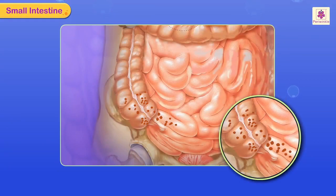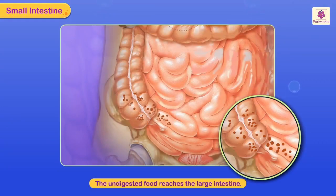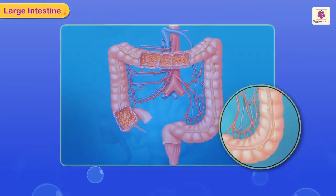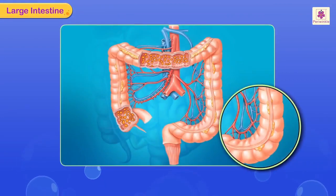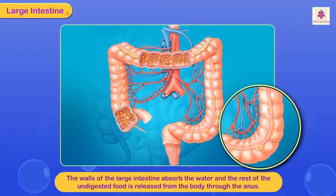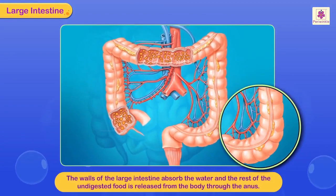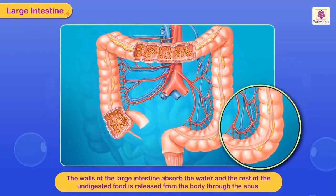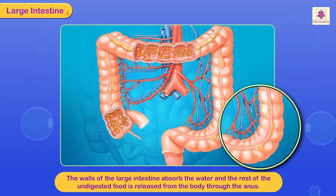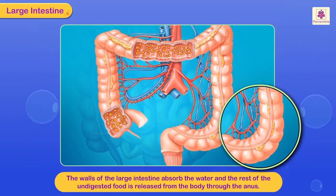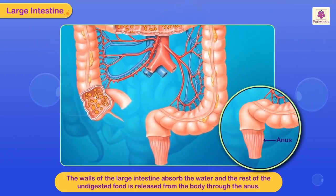Some parts of the food are not digested. This undigested food reaches the large intestine, where the walls absorb the water, and the rest of the undigested food is released from the body through the anus.